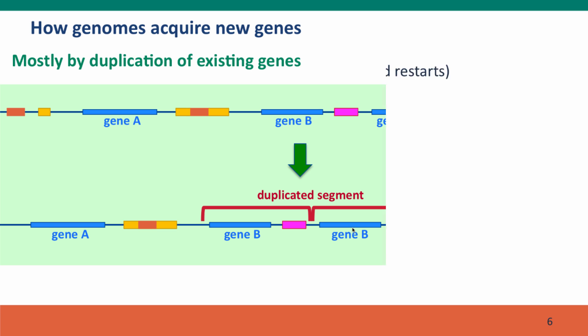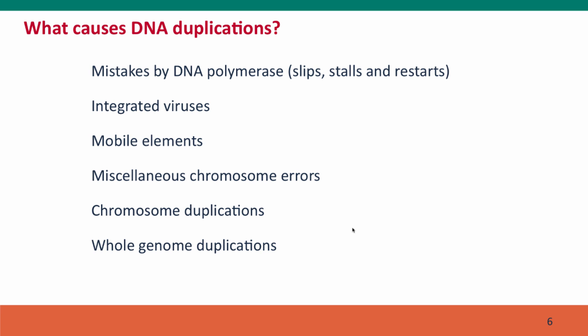What kinds of events can cause this? Mistakes by DNA polymerase — especially if there are repeated sequences in the neighborhood — can cause DNA polymerase to lose track of where it was and start in a new place. If the new place it starts at is behind where it already was, this can result in duplication of a segment. Viruses and genetic parasites, such as mobile elements, can also cause duplications when their insertion mechanisms go wrong. Many other chromosome errors can also cause duplications, as can whole chromosome duplications that arise through mistakes in cell division.